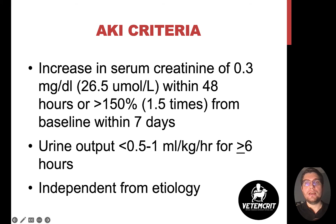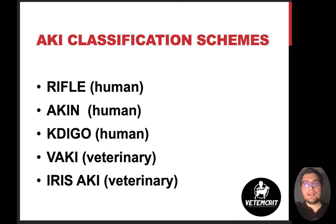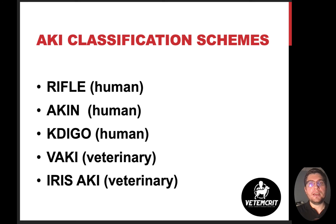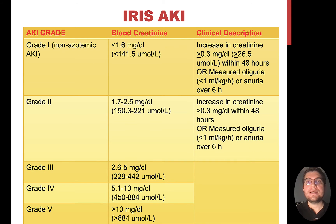These criteria are universal regardless of the etiology of AKI — whether it's pre-renal, renal, or post-renal, and whether it's infectious or non-infectious. There are multiple classification schemes out there. The first three are human schemes and the last two are veterinary schemes adopted from human medicine. All of these schemes have a lot of overlap, and serum creatinine and urine output are the major values used to grade the severity of acute kidney injury. The IRIS AKI scheme seems to be the most popular and well-known among practitioners; however, there is no proven benefit of one scheme over another.